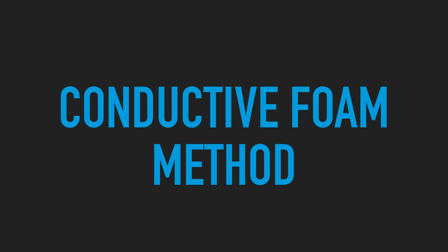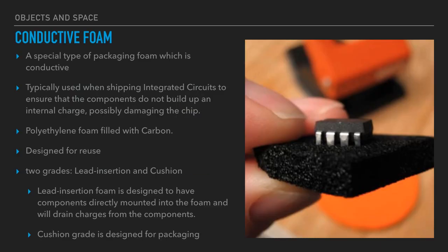But you can make your own smaller scale FSRs. And this may be a good method depending on the application, on exactly what you're doing. So basically, there's a special type of packaging foam that's usually used when selling integrated circuits or small electronic components. And this foam is specifically designed to be conductive. And it uses a similar method, actually, as a Velostat, where it's a polyethylene foam and it's filled with carbon.